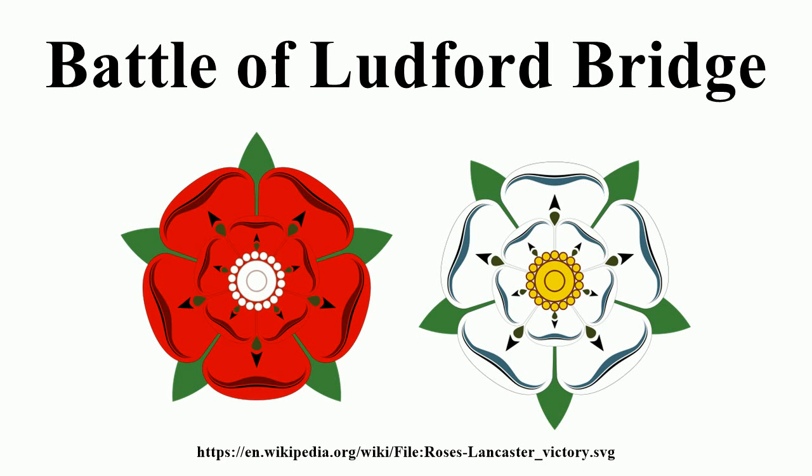Giving the impression of returning to Ludlow for the night, York, Salisbury and Warwick abandoned their armies and fled. York, with his second son Edmund, Earl of Rutland, fled into Wales, and from there to Ireland. Salisbury, Warwick and York's eldest son Edward, Earl of March went to the West Country where a supporter, Sir John Dinham, loaned them a boat which took them to Calais, where the garrison still supported Warwick.